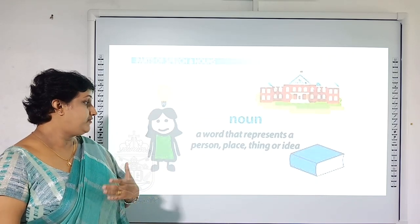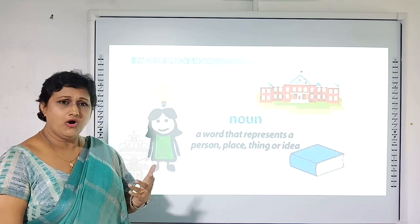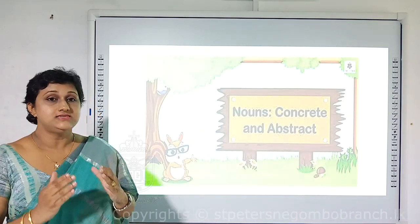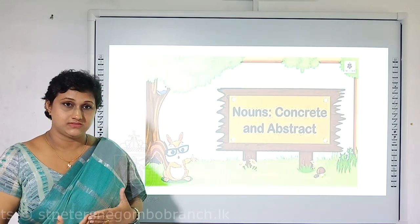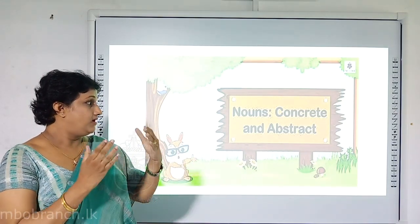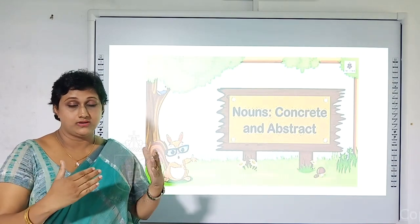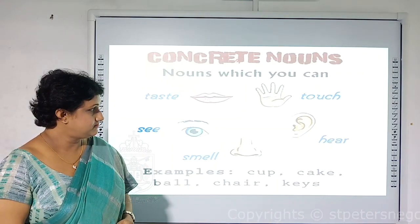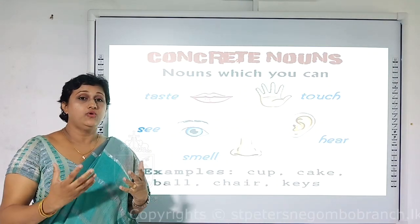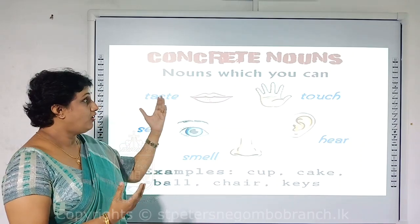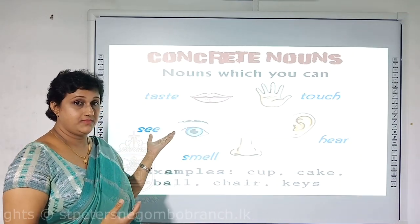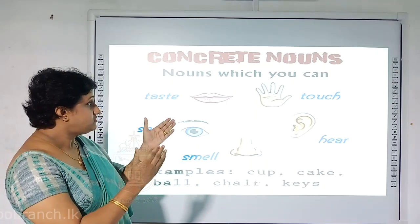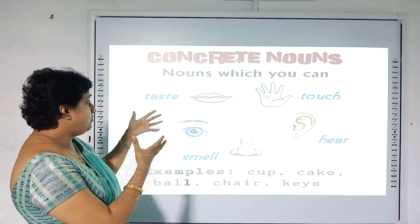A noun is a word that represents a place, a person, a thing or an idea. These nouns can be classified into various sections. The first classification is concrete nouns and abstract nouns. Concrete nouns are nouns which you can taste, see, smell, hear and touch — nouns you can perceive using your five senses.